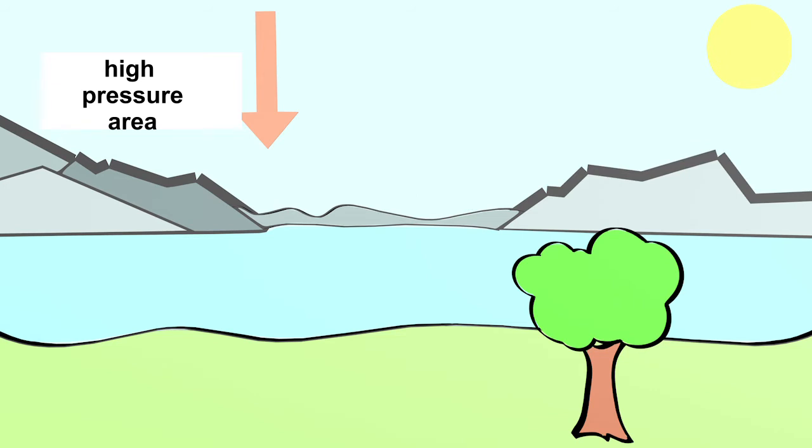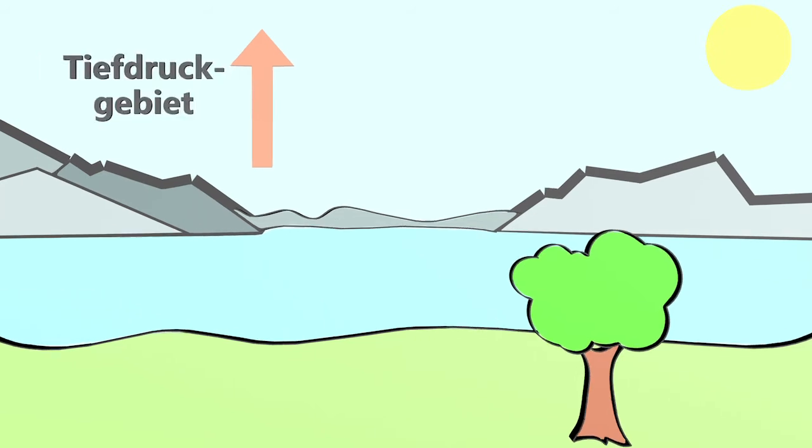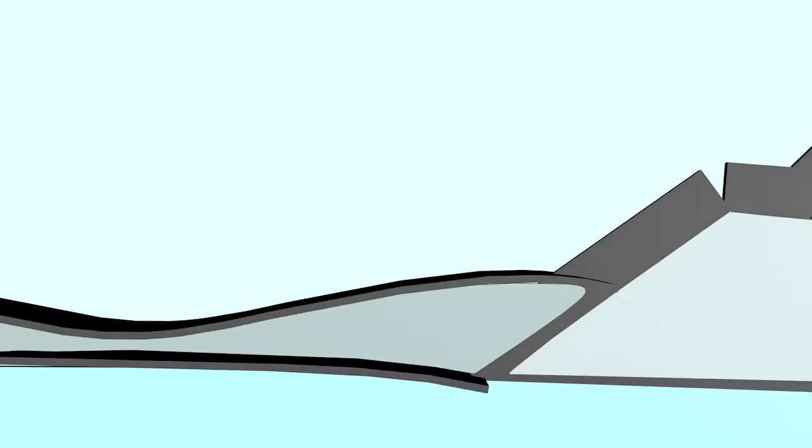In a low pressure area, the air moves upwards. How do clouds come about? To do this, we need the energy that the sun supplies. For example, the sun warms the water of a lake.